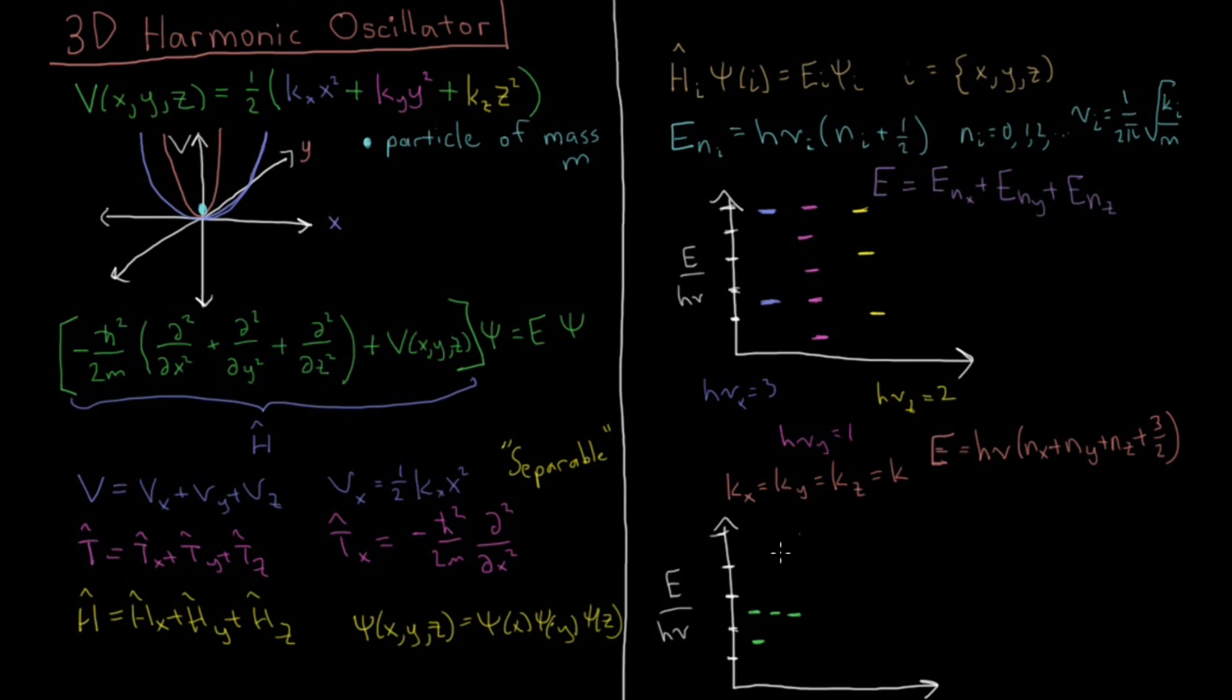Then at the next energy level we could have 2,0,0, 0,2,0, 0,0,2, or 1,1,0, 1,0,1, 0,1,1, depending on what all the different quantum numbers are that add up to give us this energy totaling up to 7/2. So now we have a six-fold degenerate state and this is just going to increase as we go up. I think you can convince yourself with enough time that the fourth state in energy that we get here ends up being tenfold degenerate. There are ten ways to arrange three numbers from starting at zero to add up to three.